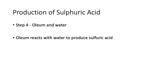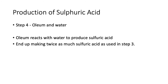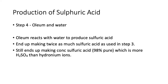Finally, you mix the oleum with water, and it produces sulfuric acid — in fact, double the amount of sulfuric acid than what you consumed in the last step. In the last step we used sulfuric acid in the absorption tower; when you react this oleum with water, you produce double that amount, so you may end up making twice as much sulfuric acid as in step three. You still end up making concentrated sulfuric acid, which is 98% pure — meaning there's almost no water.